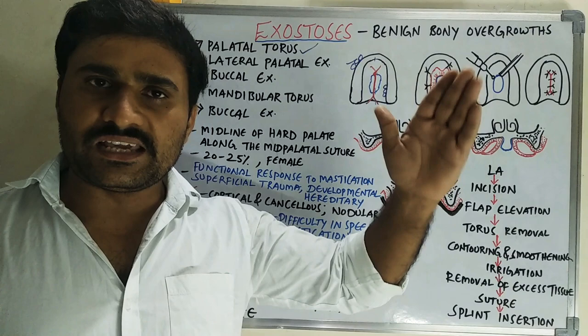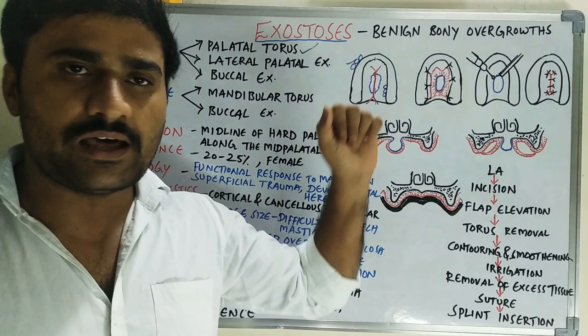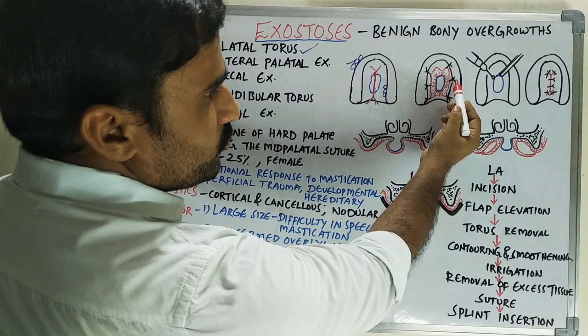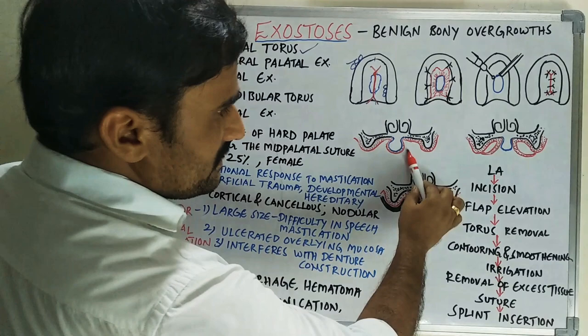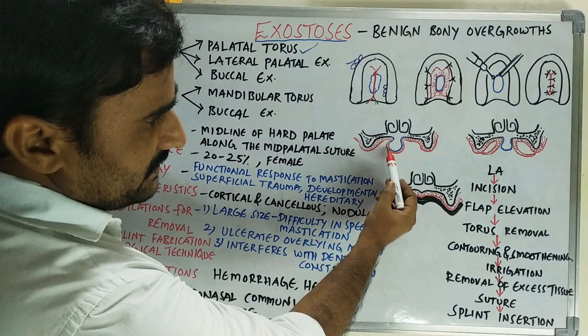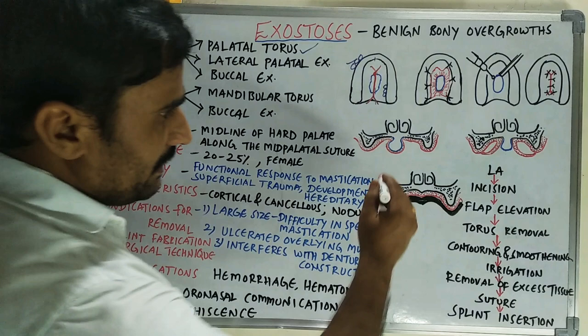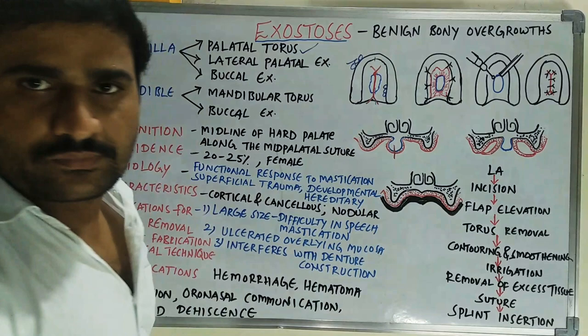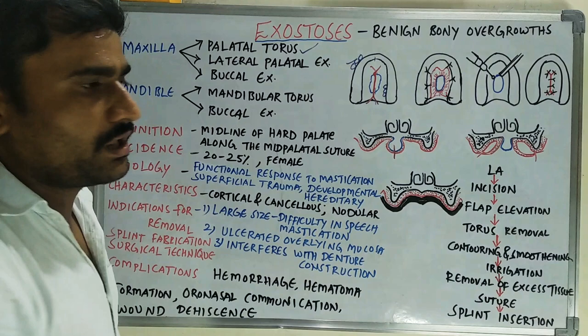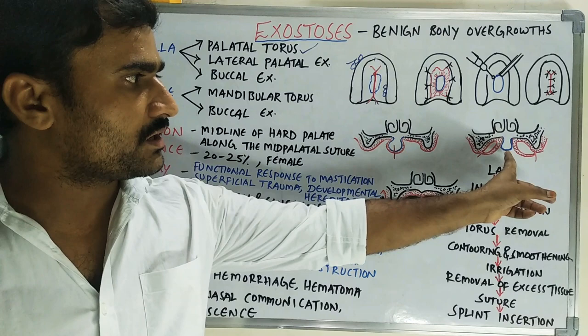After incision, flap elevation is the next step. We have to completely elevate a full-thickness mucoperiosteal flap. After flap elevation you can see the torus. In the diagram, the red-colored area is the flap elevated on both sides, and that flap is sutured to the alveolar mucosa. The blue-colored one is the torus. This is shown in a coronal section, with the horizontal plate of the palate and alveolar process visible.